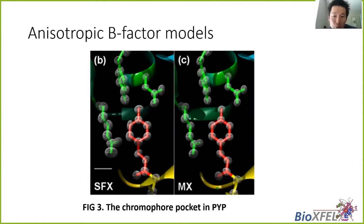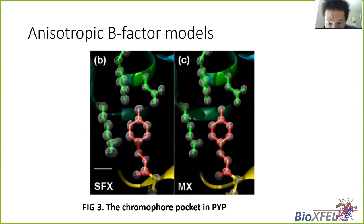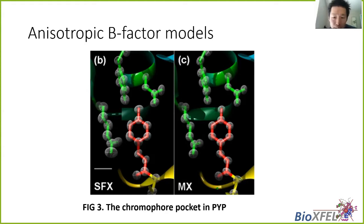With the new 1.46 Angstrom resolution, the authors were able to calculate the anisotropic B-factor model. They found the R-factor decreased a lot when using anisotropic B-factors, indicating that the model with anisotropic temperature factor ellipsoids is superior to the one with isotropic B-factors. Comparing the anisotropic temperature factors refined from conventional crystallography to those from SFX, shown in Figures 3A, 3B, and 3C, the thermal ellipsoids looked very similar, proving that SFX provides adequate data for anisotropic refinement.